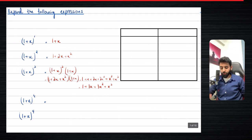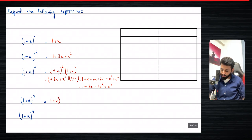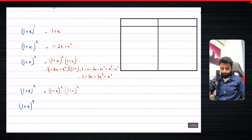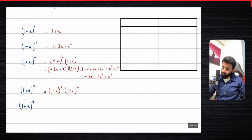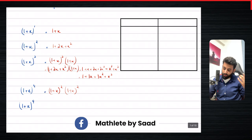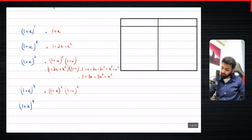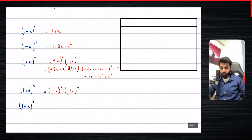To expand (1+x)^4, you'd take (1+x)² and multiply it by (1+x)² again. But what if the power immediately turns out to be nine? If you try the conventional way, you'll only be able to solve one question in the exam — you won't have time for anything else. This is basically where the Binomial Theorem comes in handy.